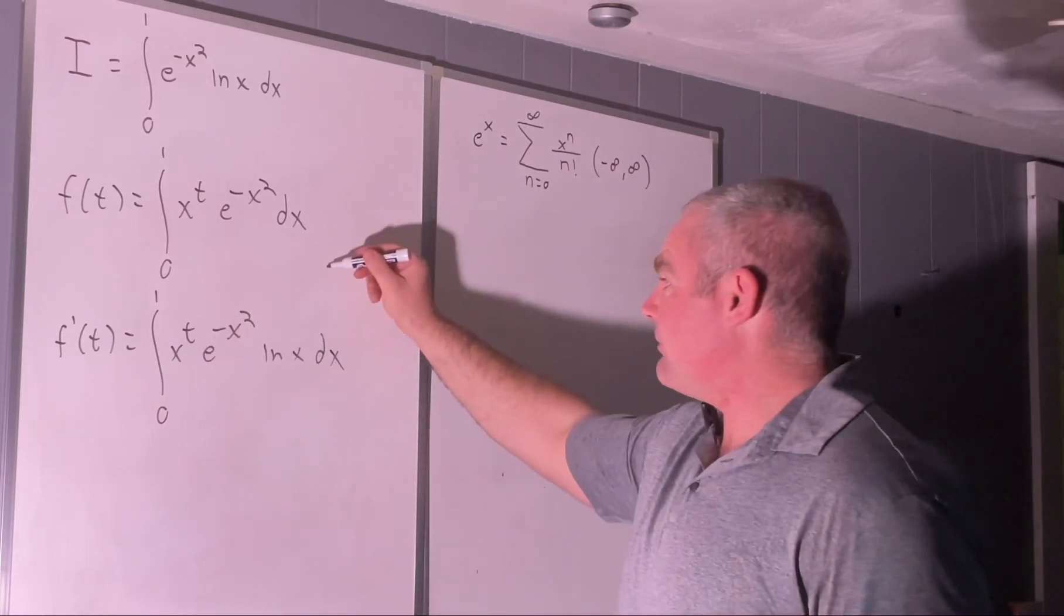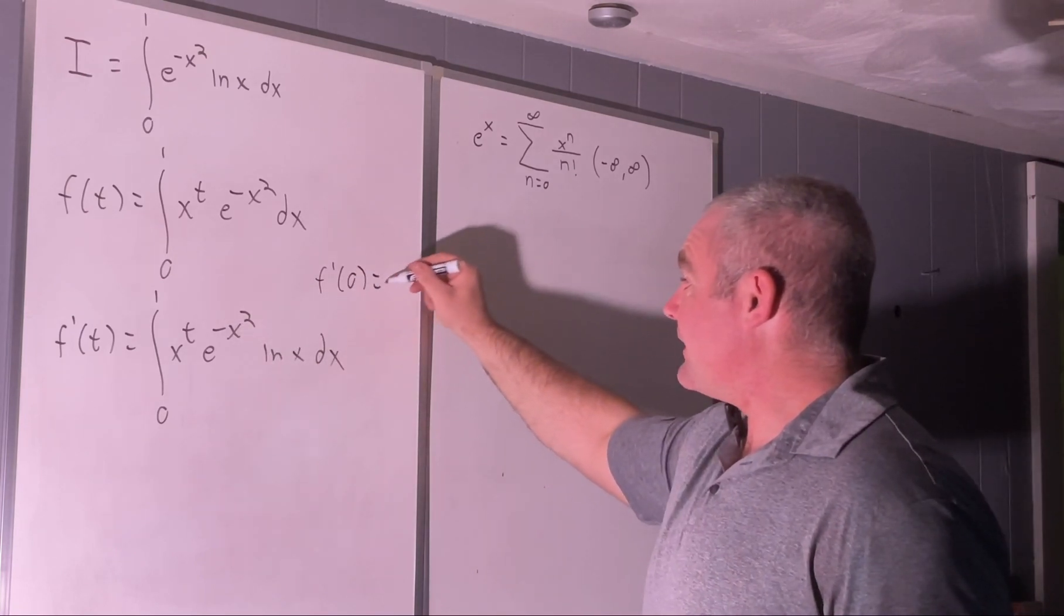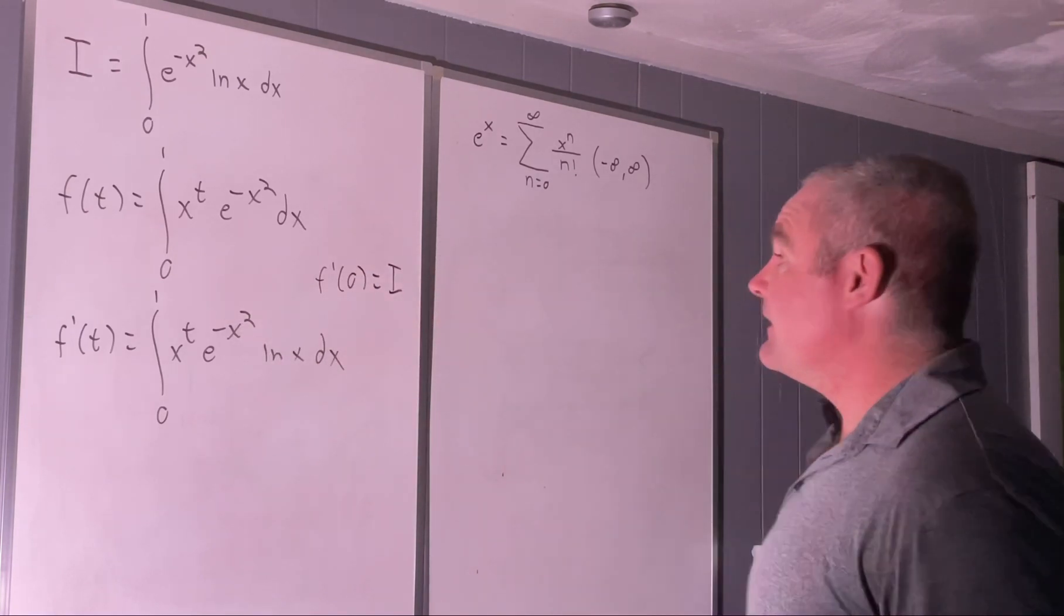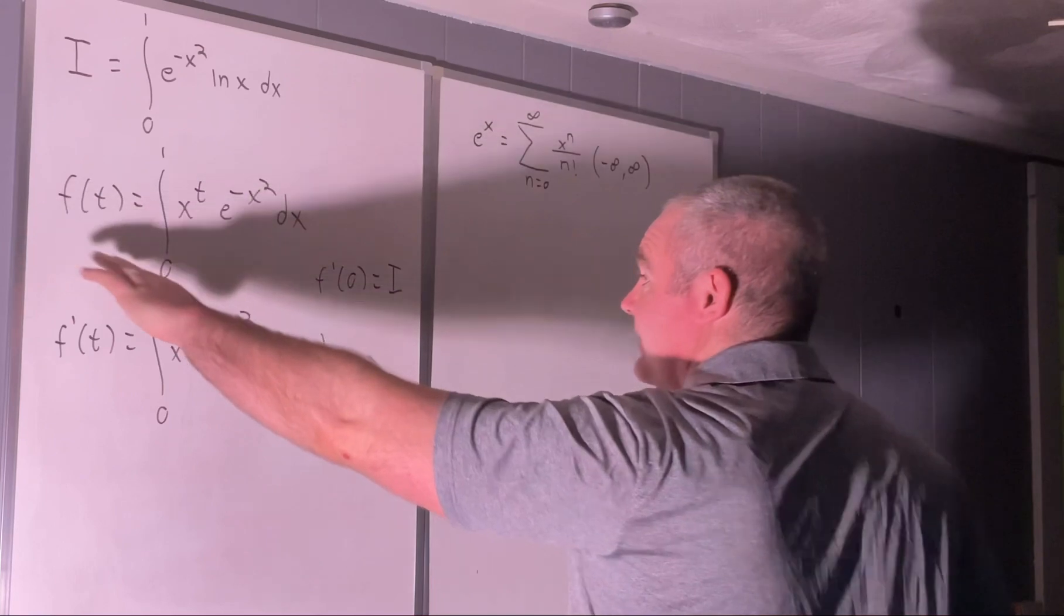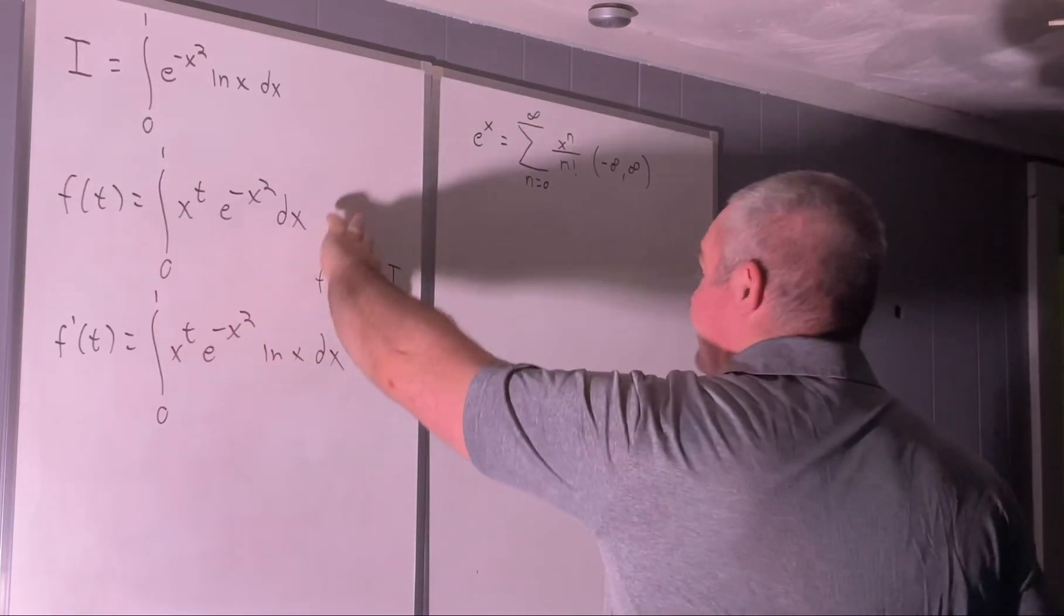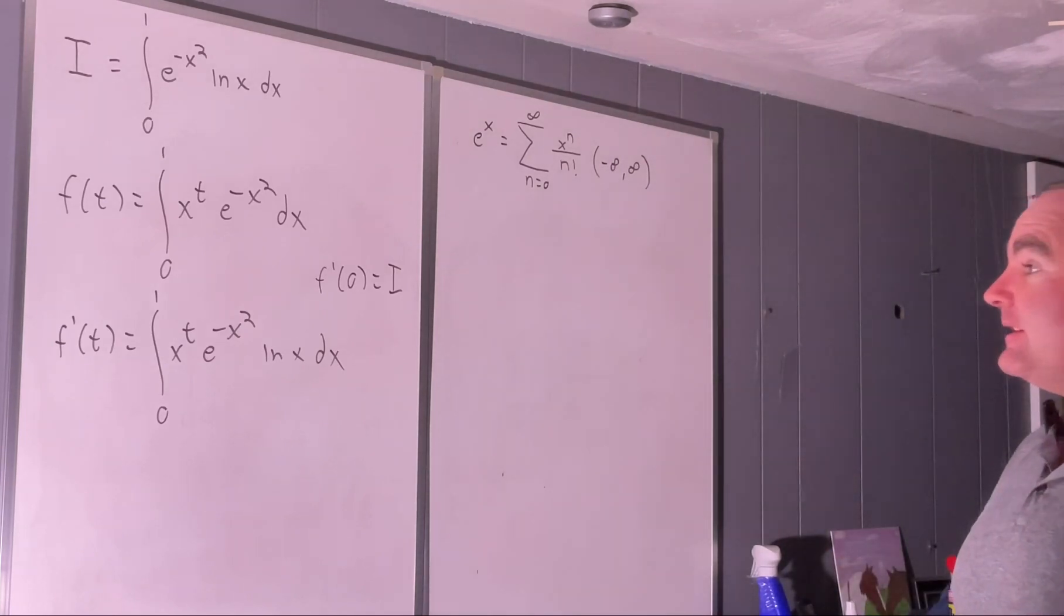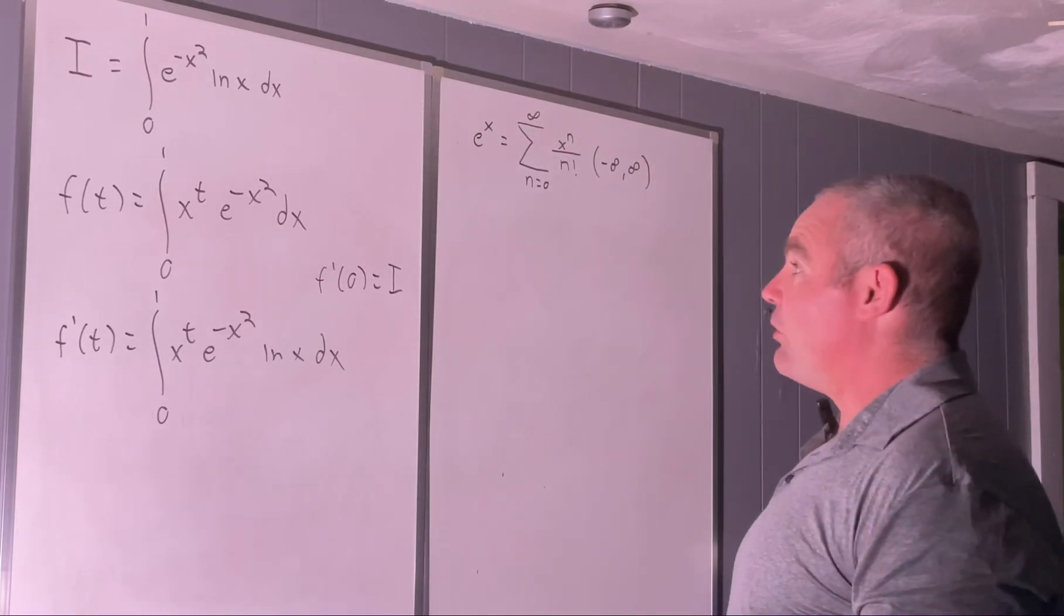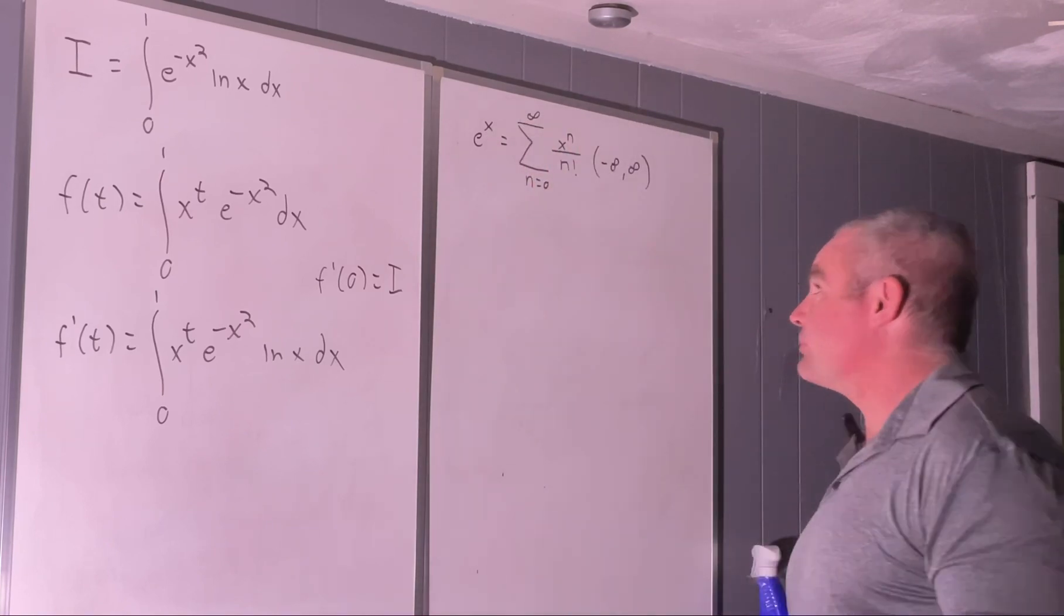Evaluating our f prime at the point t equals 0 will give us back our original integral. Okay, so this doesn't help us a whole lot yet. What we need to do now is find a new representation for our f of t. And we'll do that by using the McLaurin series representation for e to the x.